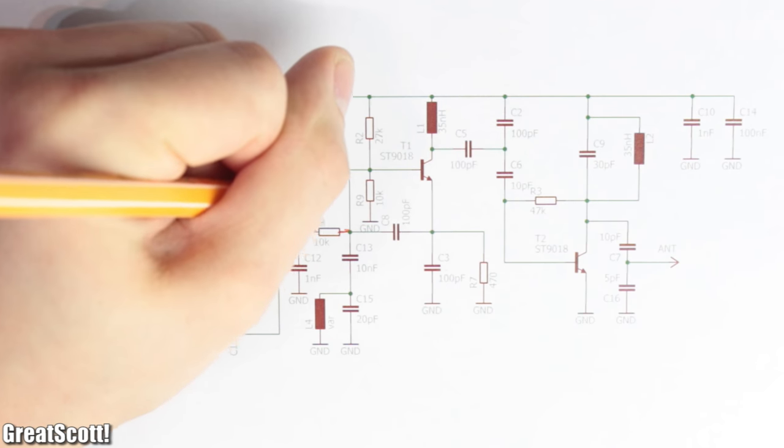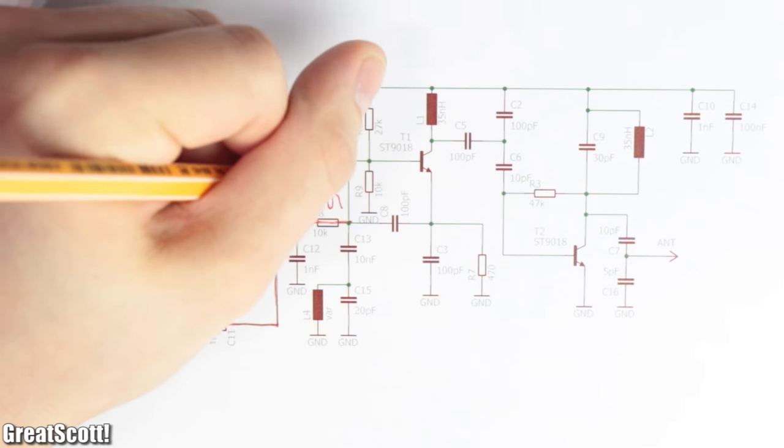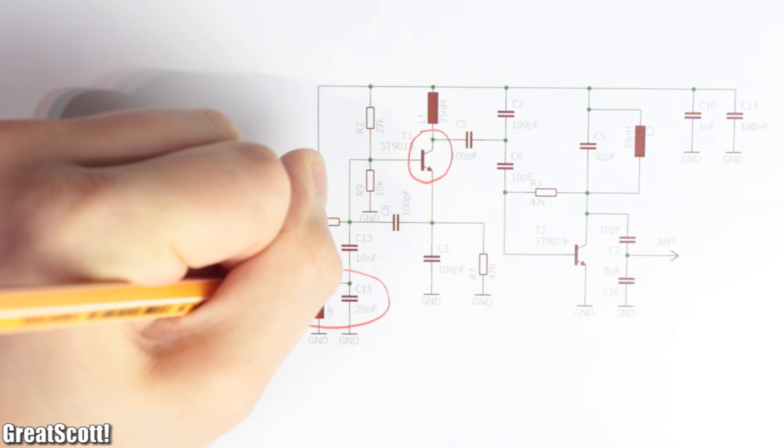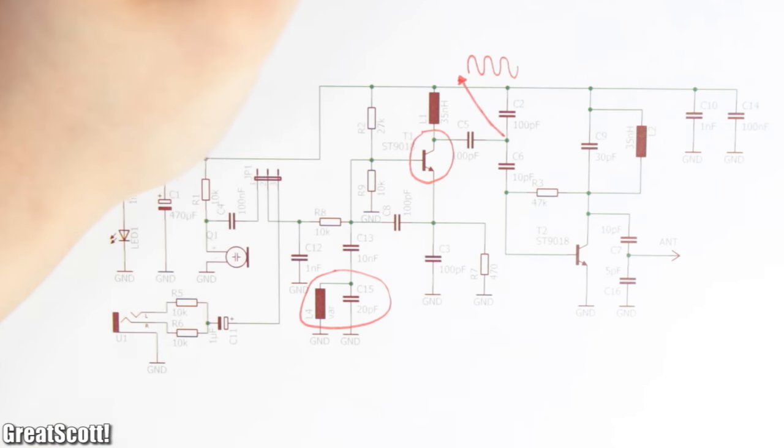At the start, we have our audio source which get AC coupled to our first amplifier stage. The transistor and LC resonator built up a high frequency oscillator, in our case around 100 MHz.